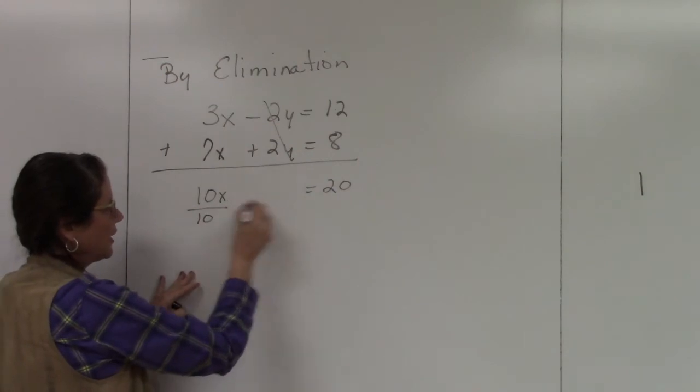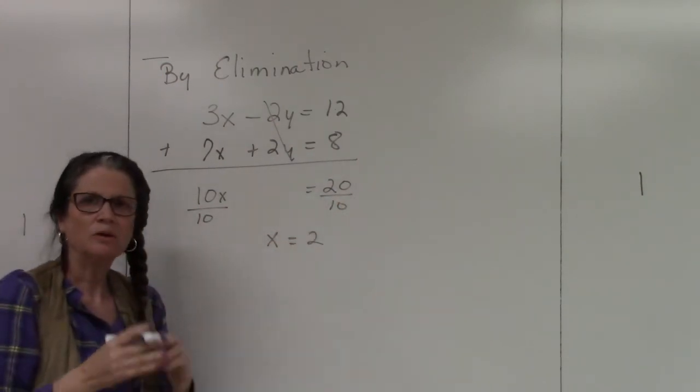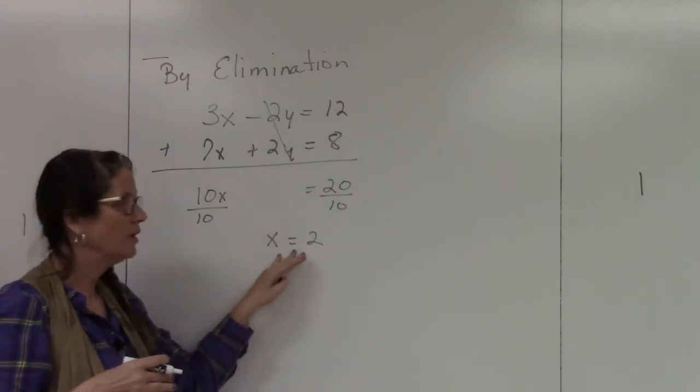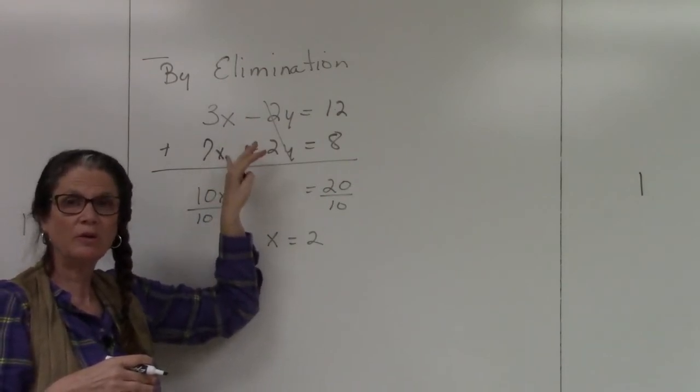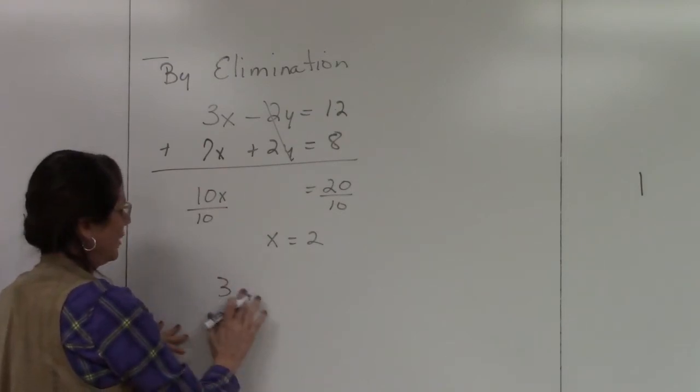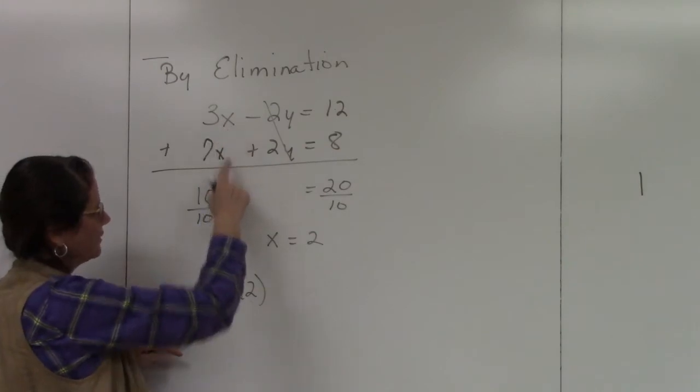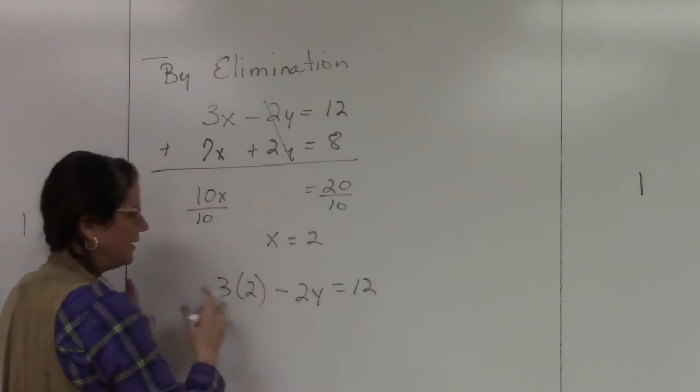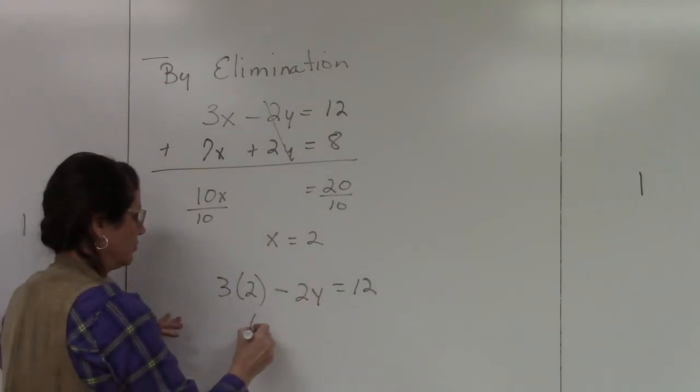Well now I have just a one-step equation: 10x equals 20. I'm going to divide both sides by 10 and I get x equals 2. Well again, the whole point is to get an x and a y. Well once I get an x value, then I can plug it back into either one of the original equations and solve for y. So I'm just going to randomly pick the top one. So I know my x is 2, so I'm going to take the x out and substitute in the 2, and then minus 2y equals 12.